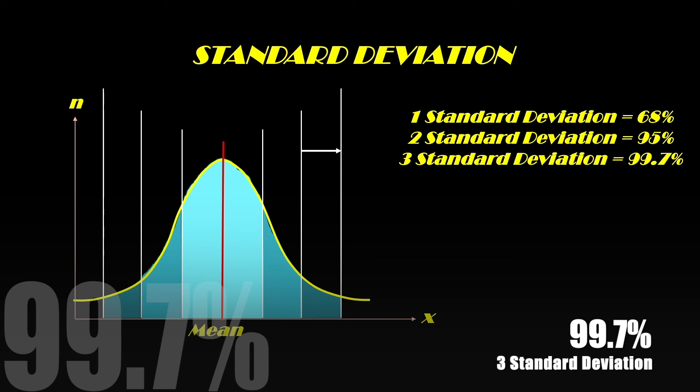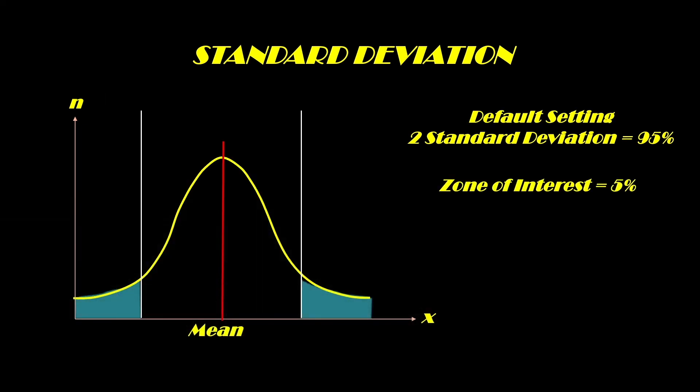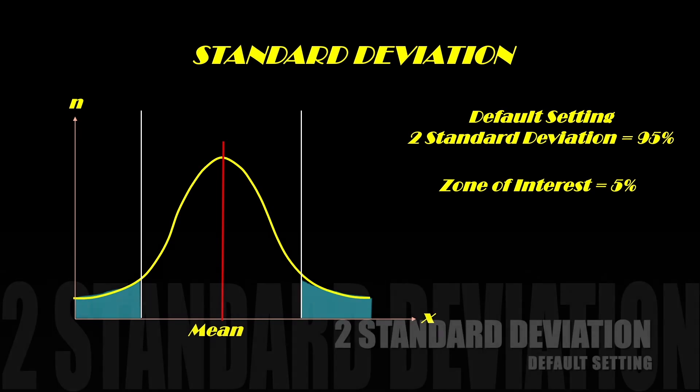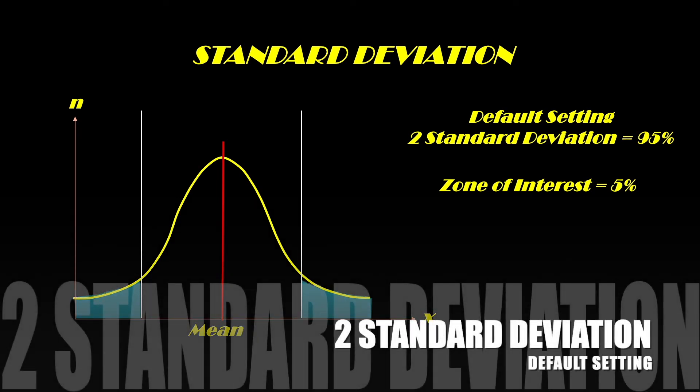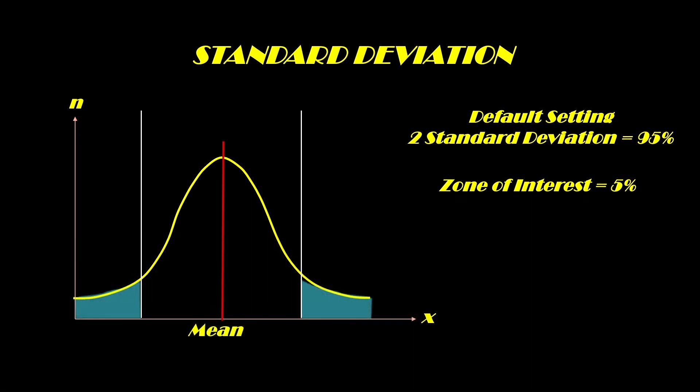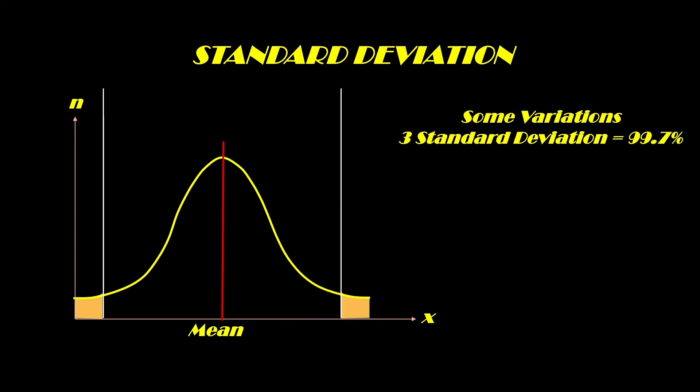Which means if we are using the two standard deviation, our zone of interest would be that 5 percent that lies outside this 95 percent. And if we extend that to three standard deviations, then it means any point that is outside that three standard deviation is basically 0.3 percent of the total data set.